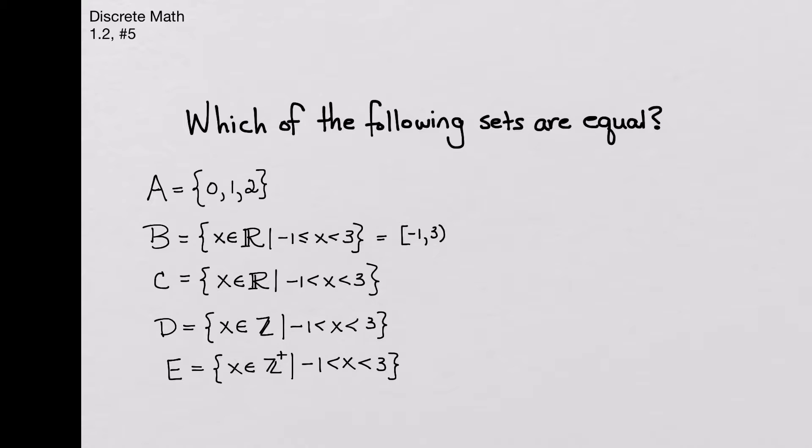Now let's take a look at set C. Is this equal to one of the others? Well, again, X can be a real number, and in this case, X is not equal to negative 1 or 3, but those are the end points. So we're not including the negative 1, we're not including the 3. Are B and C equal to each other?